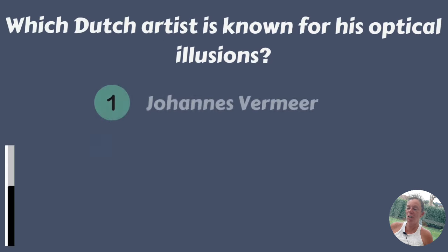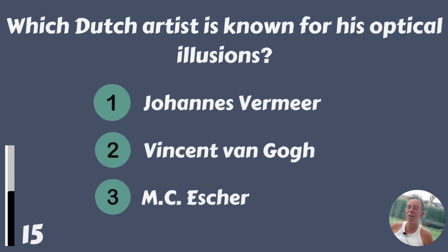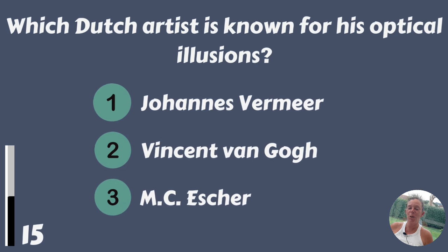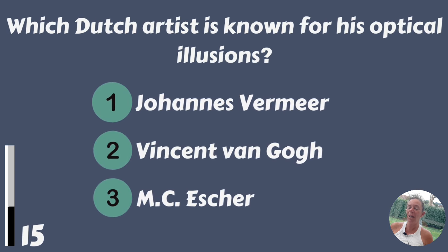Which Dutch artist is known for his optical illusions? Johan Vermeer, Vincent van Gogh or M.C. Escher?